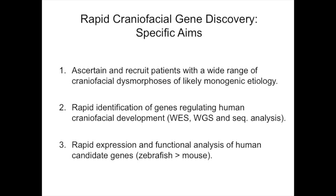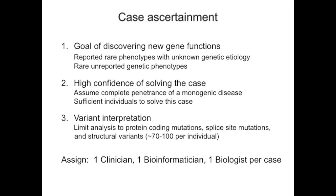Lastly, there's the functional analysis. In case ascertainment, we're really picking cases that are largely one-offs. Obviously, if we can find multiple independent occurrences of the same gene being affected, then we don't need to resort to model organism studies — that's the best proof of all.